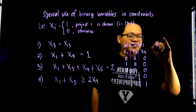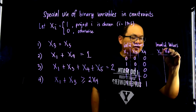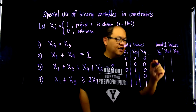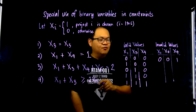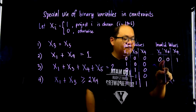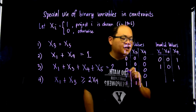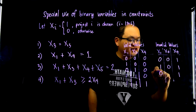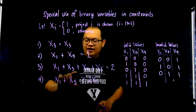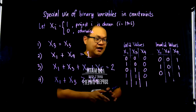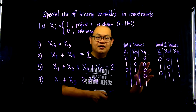Now for our invalid values, we still have x1, x3, and x4. We can put here the rest of the possibilities. (0,0,1) should be invalid — you cannot choose 4 if you haven't chosen both 1 and 3. Likewise, you cannot choose 4 if you've only chosen 1 but not 3, and you cannot choose 4 if you've only chosen 3. All you have to do is make sure the constraint x1 plus x3 greater than or equal to 2x4 conforms with the table of valid values, and that invalid values are truly invalid.